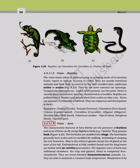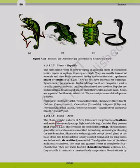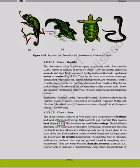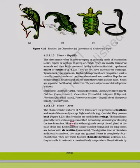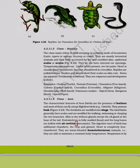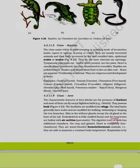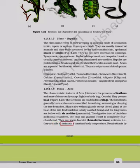Class Aves (Birds): Characteristic features are the presence of feathers and the ability to fly — except flightless birds like the ostrich. They possess a beak; forelimbs are modified into wings. Hind limbs generally have scales and are modified for walking, swimming, or clasping branches. Skin is dry without glands except the oil gland at the tail base. Endoskeleton is fully ossified; long bones are hollow with air cavities (pneumatic). The digestive tract has additional chambers — crop and gizzard. Heart is completely four-chambered. They are warm-blooded (homoiotherms).